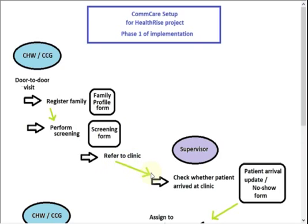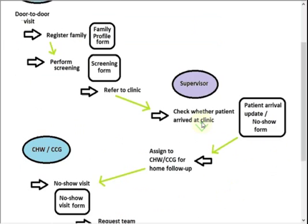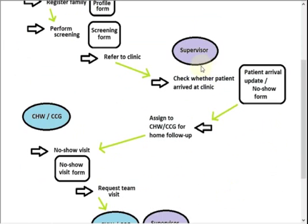From the clinic referral, once a week or maybe every two weeks a supervisor will go to the clinic. They also have a Comcare app on their own phone and will check the list of arrivals to see whether the referred patient actually arrived. They will fill out the patient arrival update or the no-show form. The first time they will follow up with a phone call, and if after a second call they still haven't arrived, they will assign that person back to the CHW or CCG for a home follow-up because they haven't been able to contact them by telephone.